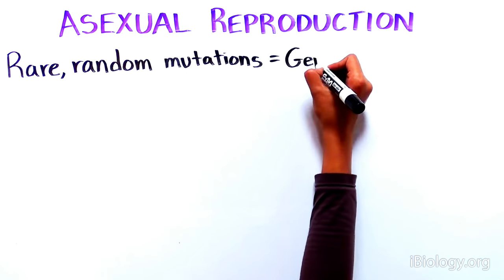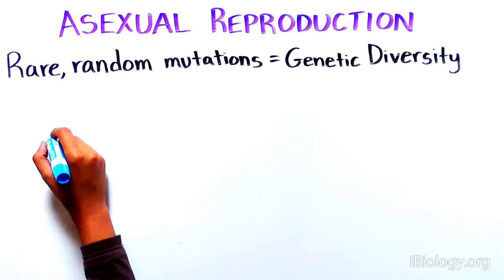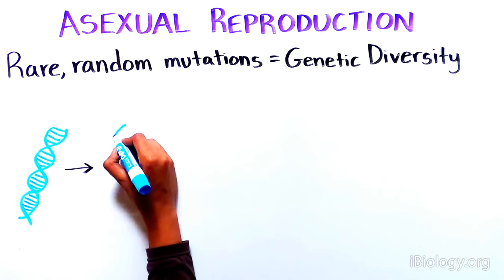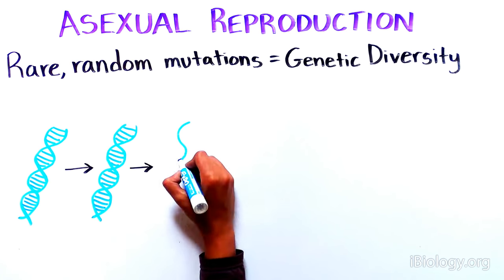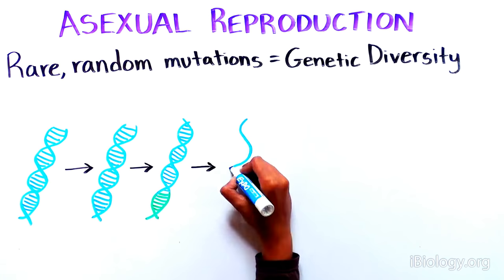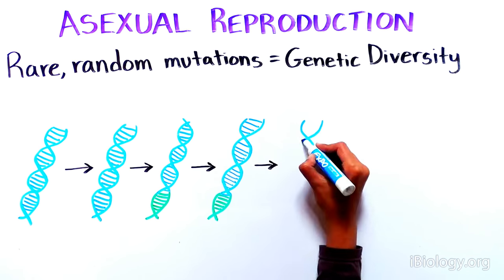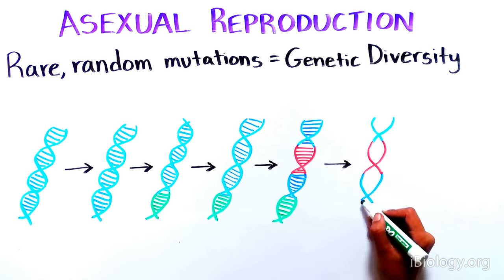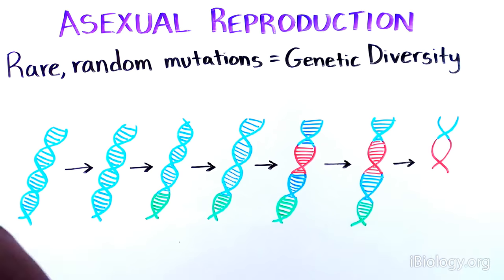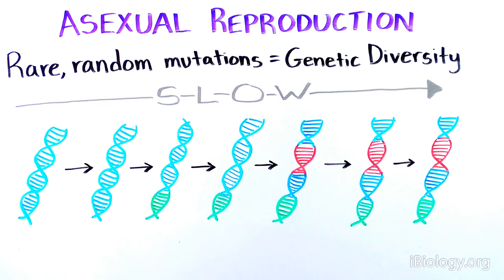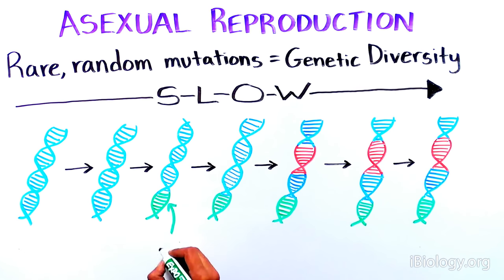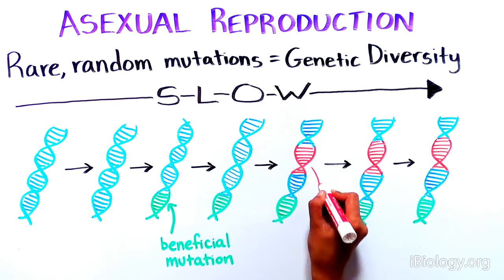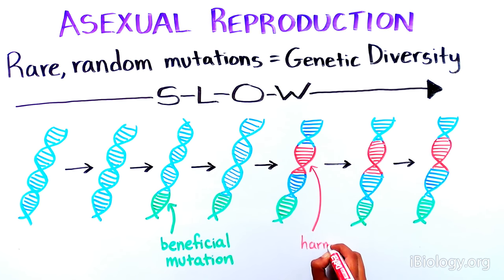Rare, random mutations in the genome do allow asexually reproducing organisms to evolve diversity. However, this is a slow process and there is no mechanism to separate harmful and beneficial mutations for propagation to future generations.